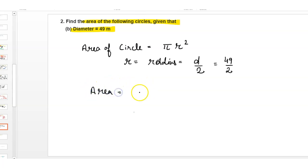So area is equal to π, which is 22/7, multiplied by r², which means 49/2 times 49/2.